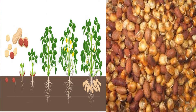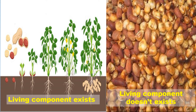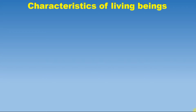Let's look at one more example. If we take raw groundnuts, they have living components — if we plant them, they grow into a plant, so raw groundnuts are living things. On the other hand, fried groundnuts have had their living components destroyed, so they are non-living things.